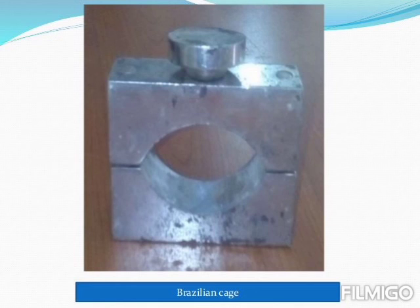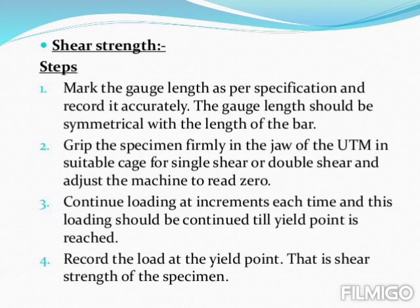This is what a Brazilian cage looks like. For shear strength, mark the gauge length as per specification and record it accurately — the gauge length should be symmetrical with the length of the bar. Grip the specimen firmly in the jaw of the UTM in a suitable cage for single shear or double shear and adjust the machine to read zero. Continue loading at increments until the yield point is reached, then record the load at the yield point, which is the shear strength of the specimen.